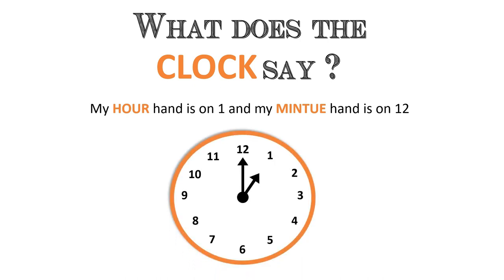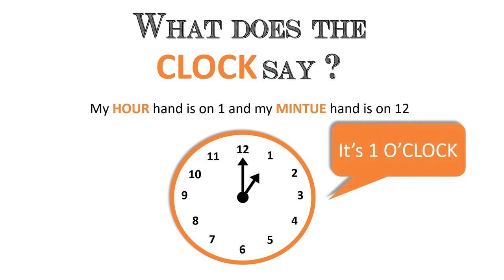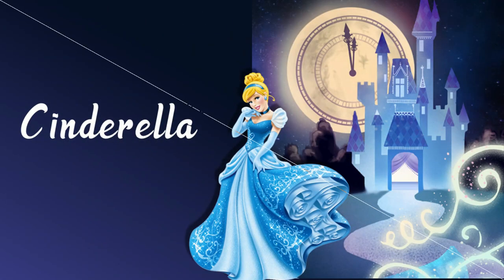When the hour hand is on 1 and the minute hand is on 12, what will be the time? Remember, the hour hand is the short hand and the minute hand is the longer hand. That's right, it is 1 o'clock.